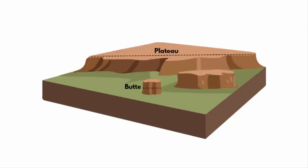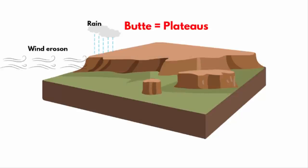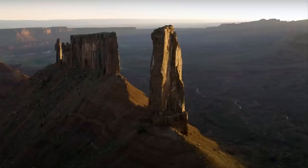If you see a butte, it is also a plateau. But due to continuous erosion by rainwater, river streams, and wind, certain sections of a plateau are not eroded fully. And that is how they have turned into a tall, flat-topped landform.